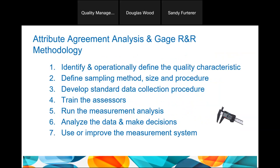The steps to use, in order: First, identify and define the quality characteristics. Second, define the sampling method, size, and procedure. Third, develop standard data collection procedures — where does the data go, how is it recorded? Fourth, train the assessors. Fifth, perform the measurement analysis after those initial steps. Sixth, collect the data and look at how the system is performing. Seventh, improve the system — cycle back and fix it. You can see plan-do-check-act in this process.